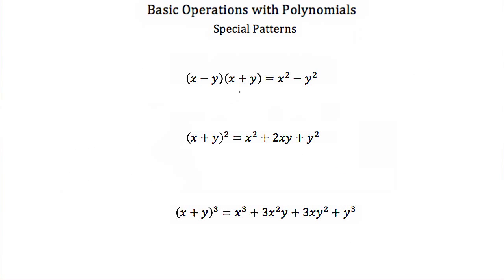When we multiply binomials, there are some special patterns you'll see. These are important later when factoring polynomials. Our first example: if you have x minus y times x plus y — the same two terms where one is subtracted and one is added — it always breaks down into the first number squared minus the second number squared. So x minus y times x plus y always equals x squared minus y squared.